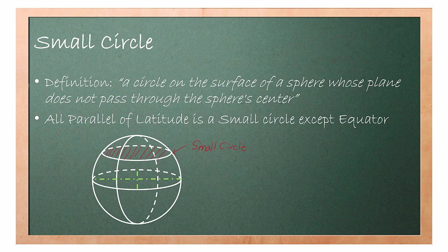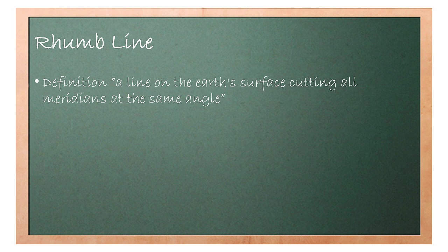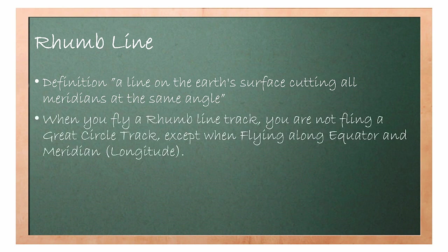All parallels of latitude are small circles except the equator. The second concept we need to understand is rhumb line. By definition, a rhumb line is a line on the Earth's surface cutting all meridians at the same angle. A key fact to remember: when you fly a rhumb line track, you are not flying a great circle track, except when flying along the equator and meridian.